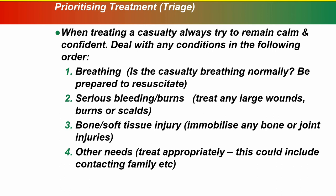Prioritizing treatment, or triage: when treating a casualty, always try to remain calm and confident. Deal with conditions in the following order. First, breathing — is the casualty breathing normally? Be prepared to resuscitate. Second, serious bleeding or burns — treat any large wounds or burns. Third, bone or soft tissue injury — immobilize any bone or joint injuries. Fourth, other needs — treat appropriately; this could include contacting family, etc.